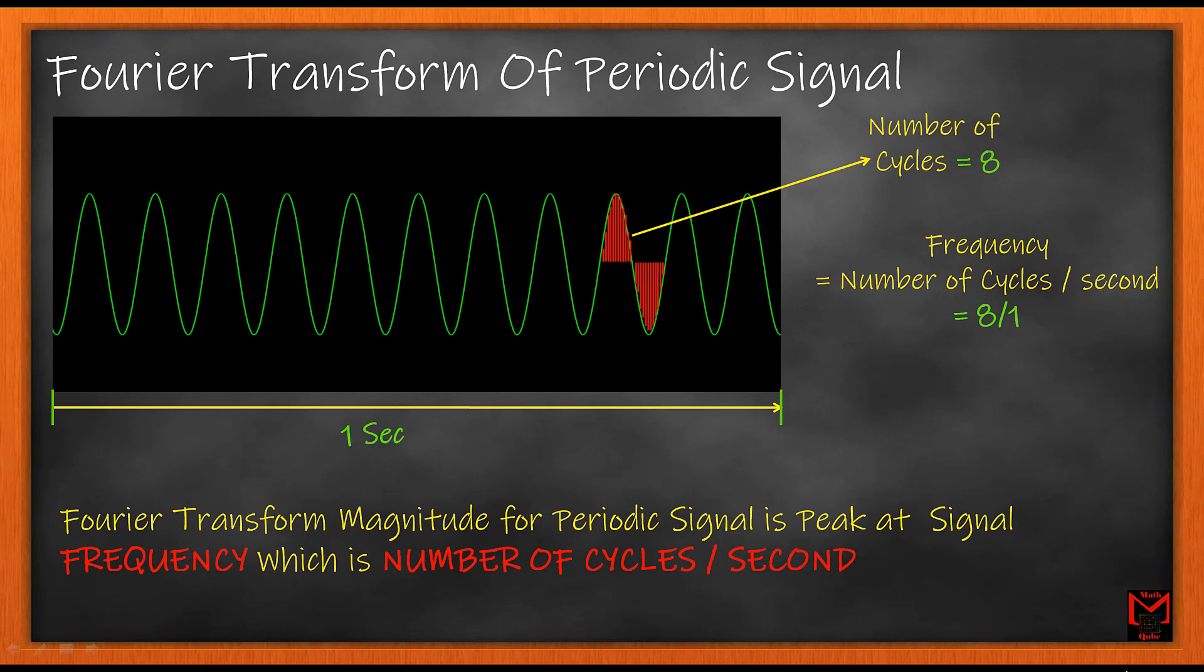What is the speciality of a periodic signal? The oscillations or repetitions of a periodic signal in time can be called as the signal frequency. As shown here, the signal frequency is defined as the number of cycles per second. In case of our signal, it can be calculated as 8 over 1 which is equal to 8.